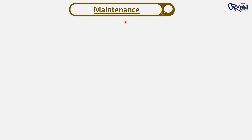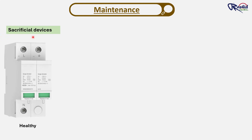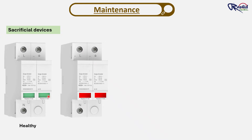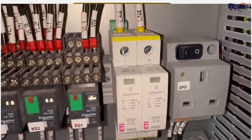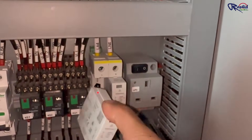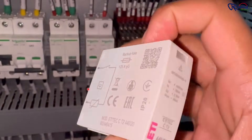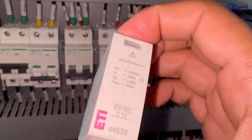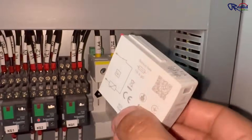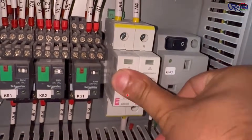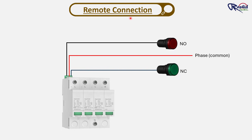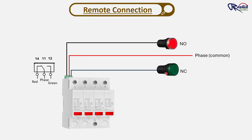Finally, the maintenance of SPDs. SPDs are not maintenance-free — they are sacrificial devices, meaning after protecting from many surges, they can become weak or damaged. That's why manufacturers provide a status indicator: green means the SPD is healthy, and red means it is faulty and the cartridge needs to be replaced. Some advanced SPDs also have remote signaling that connects to a building management system for alarms, so you can identify which SPD is healthy and which is faulty while sitting in a control room.